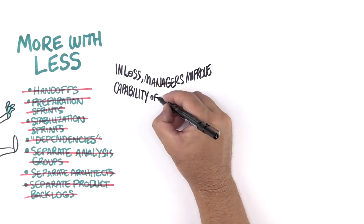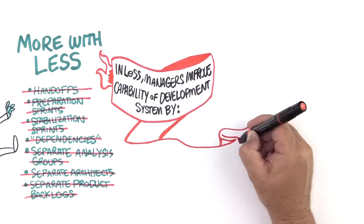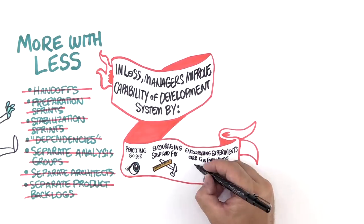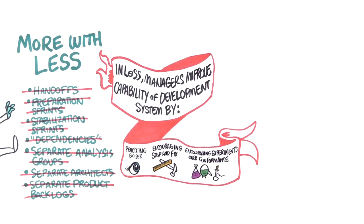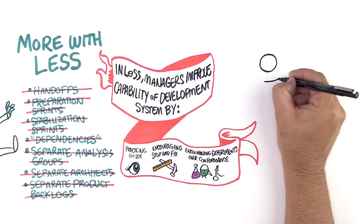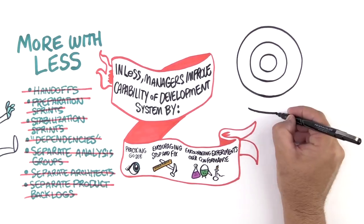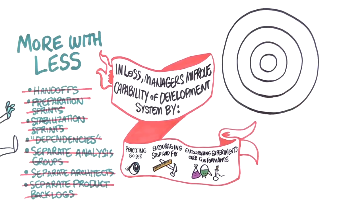In LeSS, Scrum Masters and management help the teams learn. Management shifts focus from direct command to improving the capability of the development system. In our experience, the LeSS framework is the minimum barely sufficient structure that product groups need to take ownership, gain a whole product view, and optimize organizations for value delivery and flexibility.